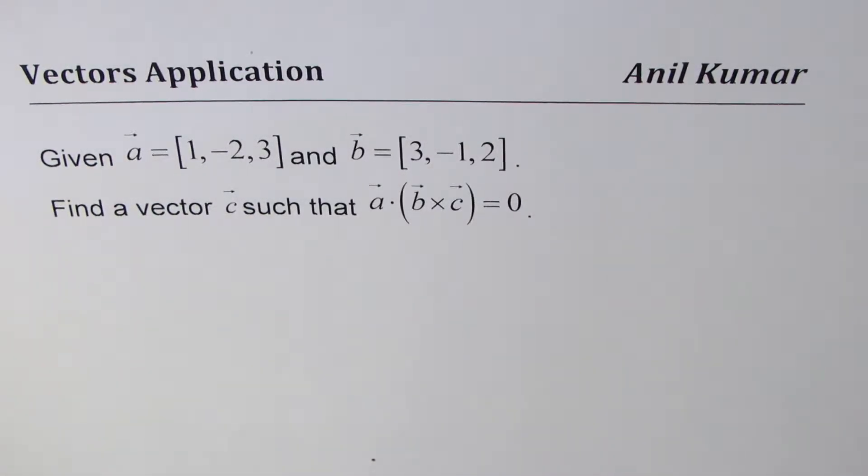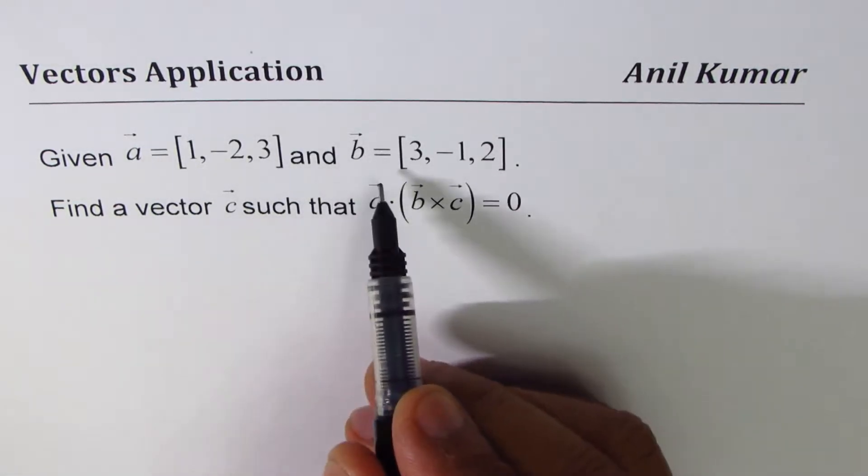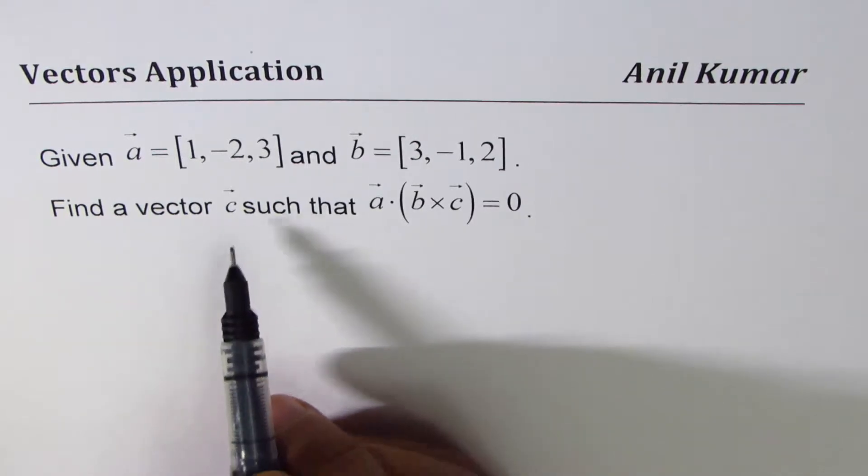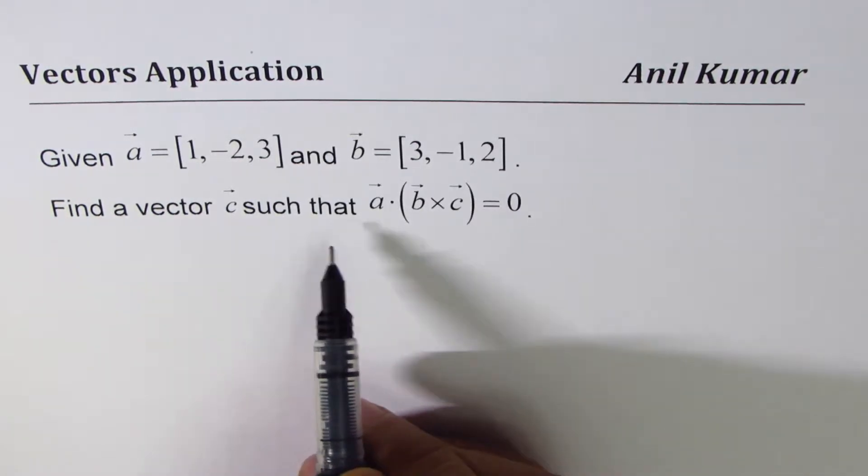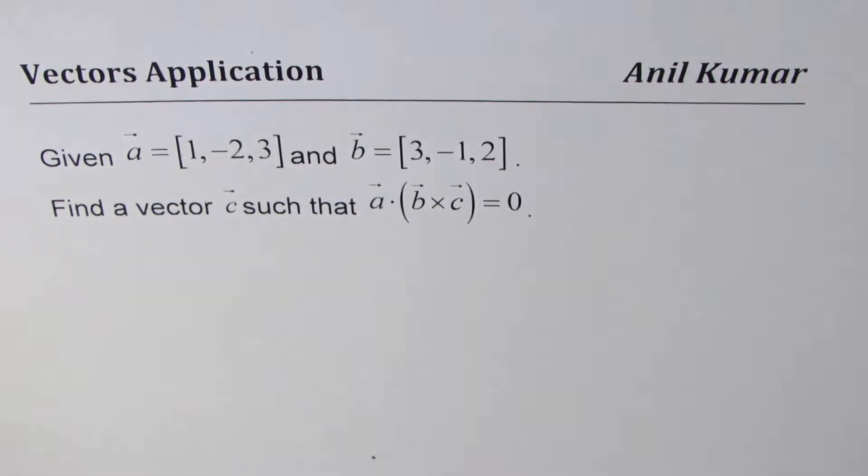I'm Anil Kumar sharing with you a thinking question on vectors application. The question here is: given a equals [1, -2, 3] and b equals [3, -1, 2], find a vector c such that a dot (b cross c) equals 0.